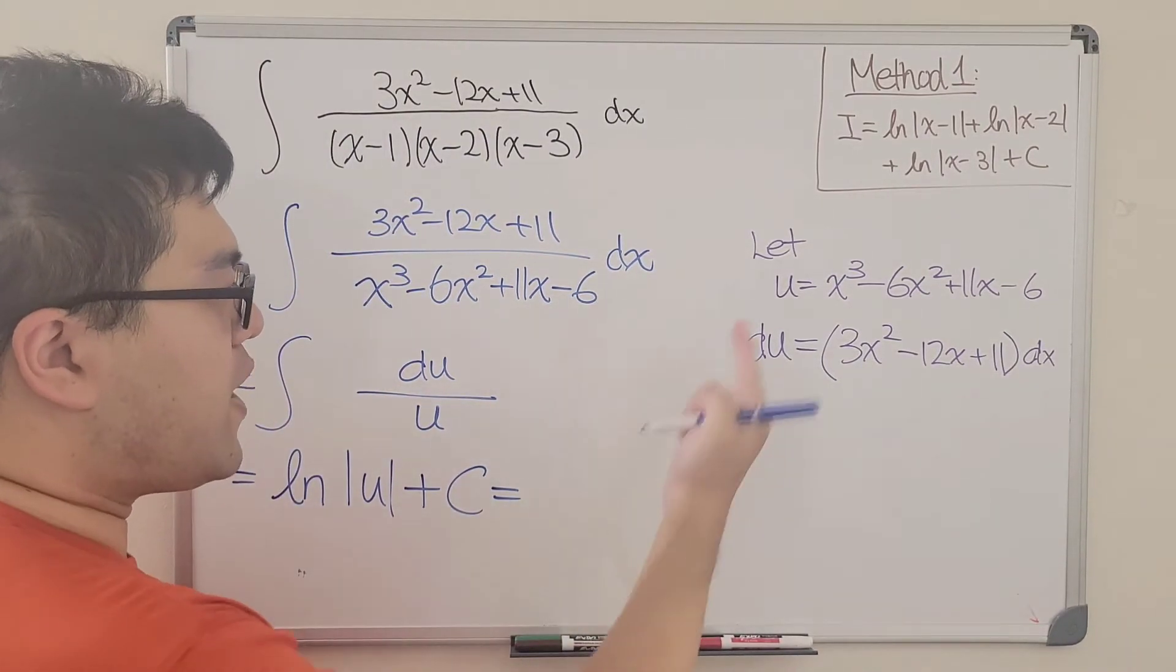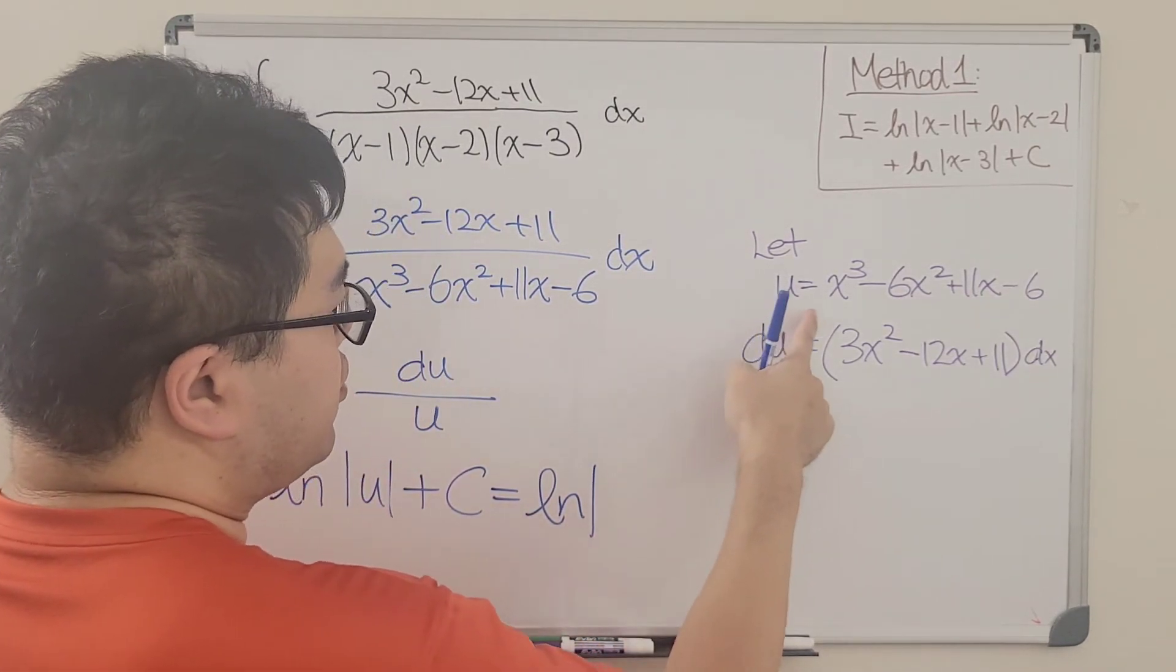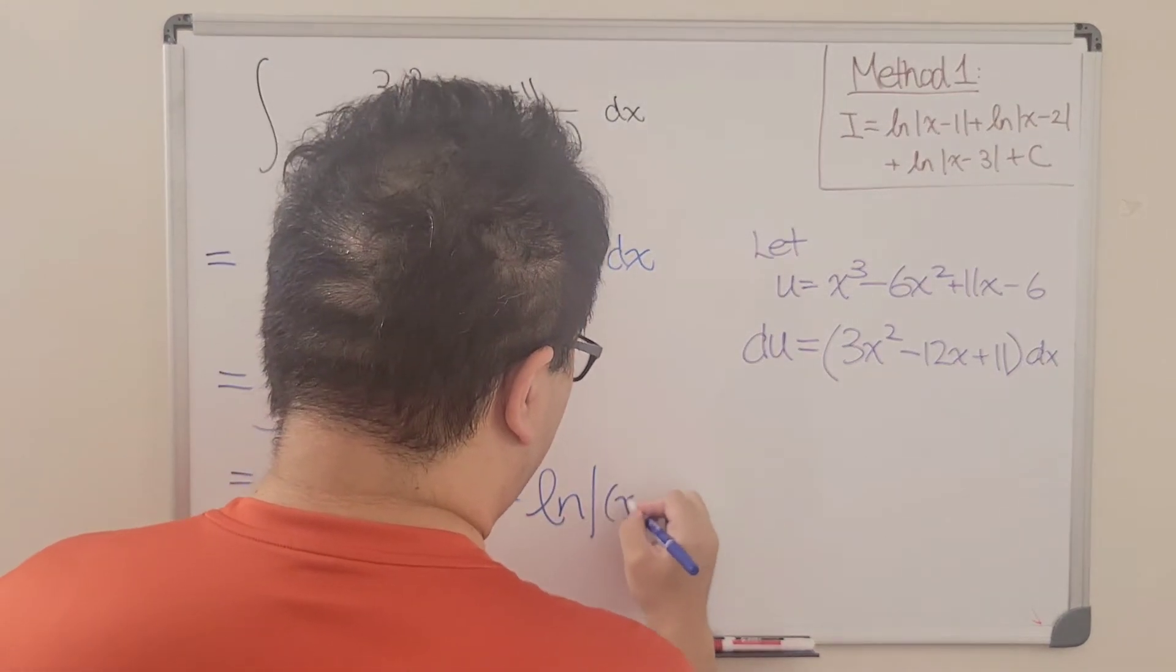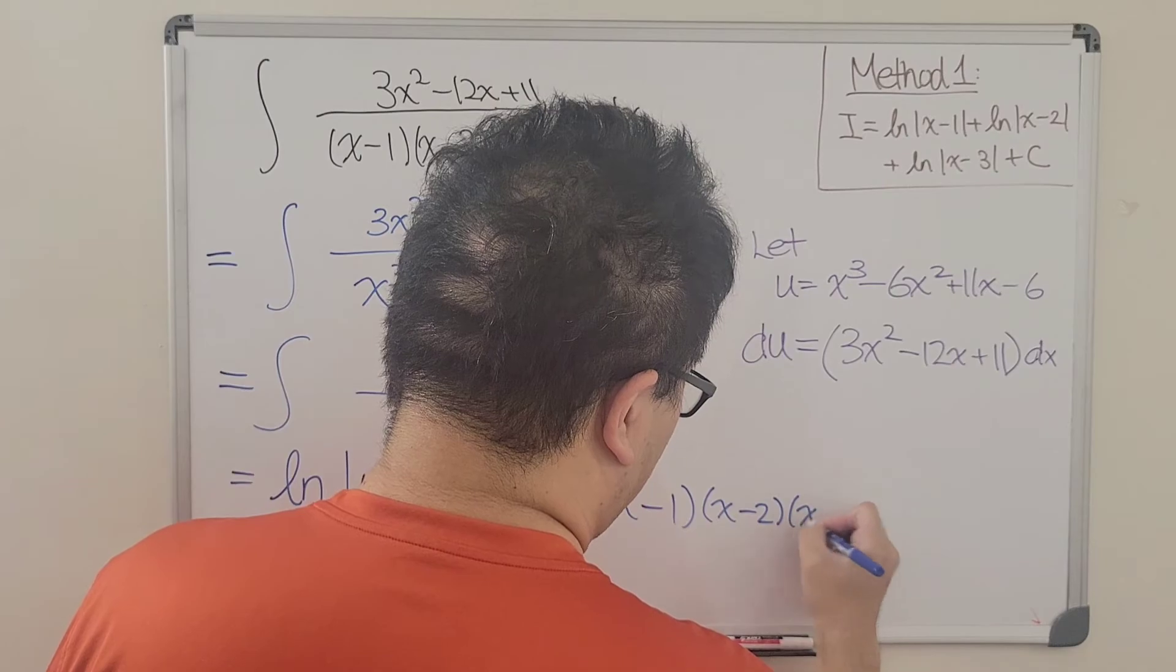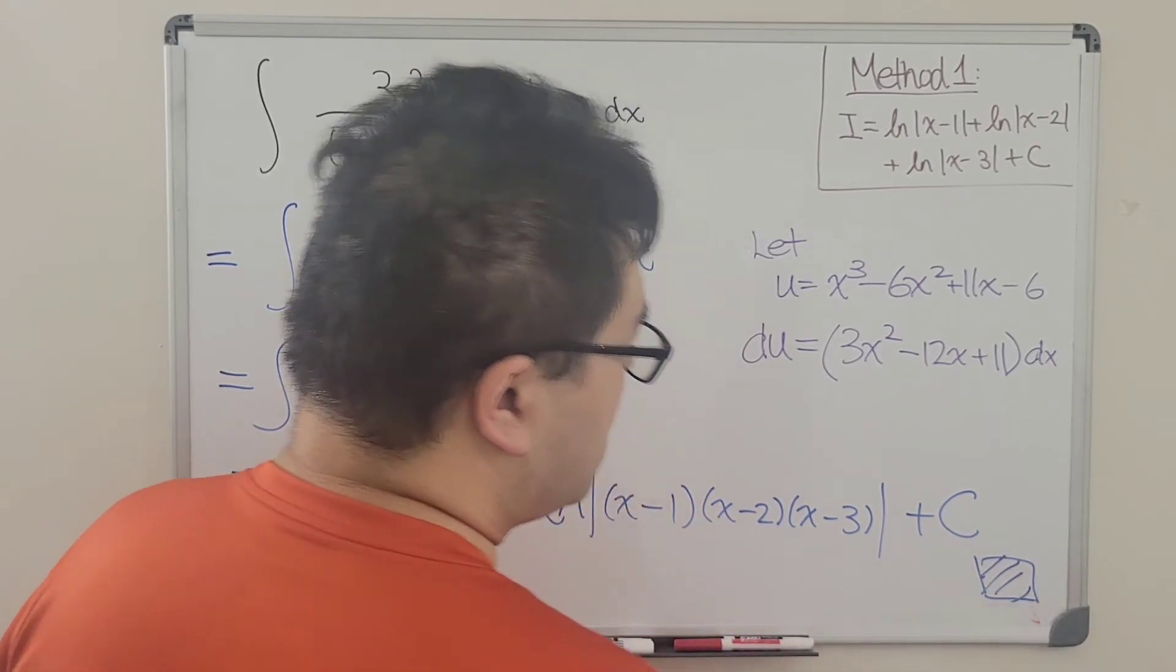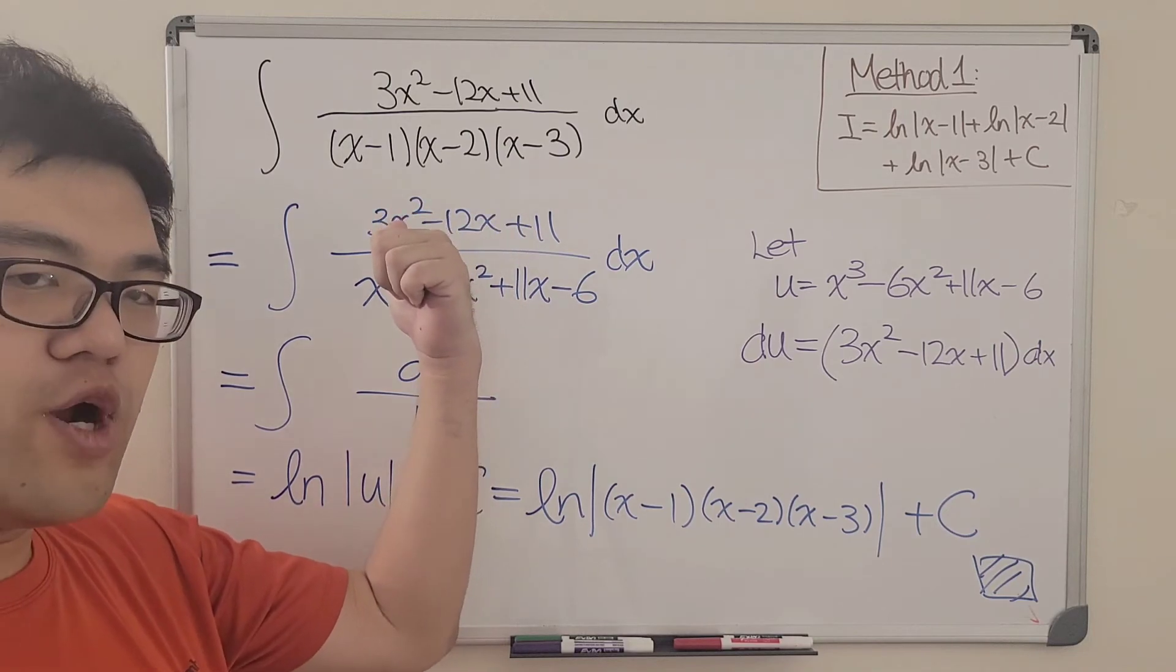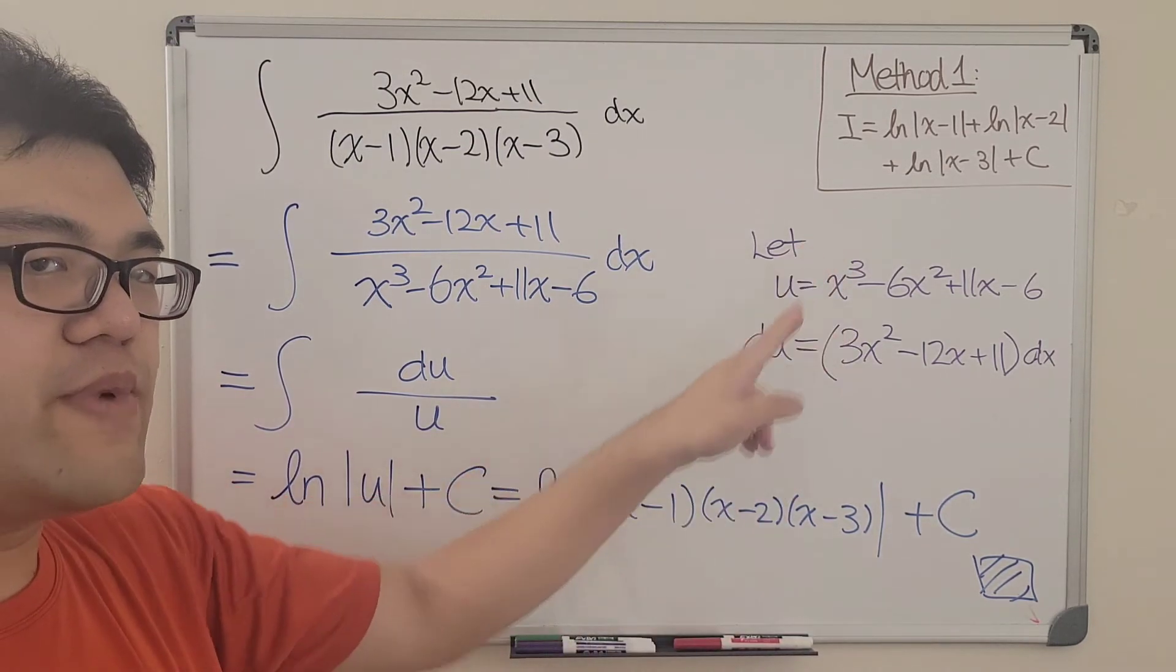So that means we can now replace the whole numerator by just du and the denominator by u. And again, now we're going to take the integral of 1 over u. And the integral of 1 over u is just ln of absolute value of u. And with the plus constant term. Finally, we're going to substitute back what u is into our expression. And again, u is this product here, but this product is from the denominator, which is same as the product of these three terms. So we can just rewrite it as ln of x minus 1 times x minus 2 times x minus 3 plus the constant term.